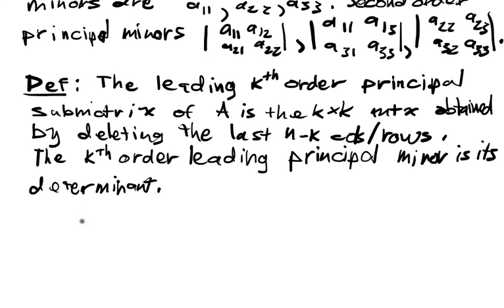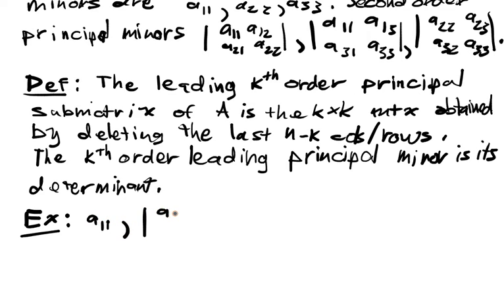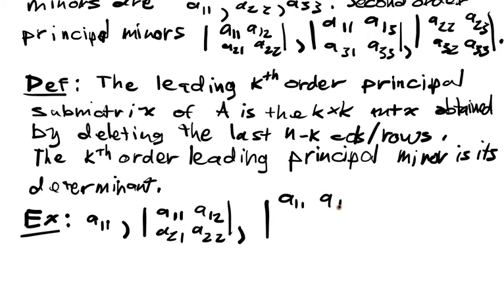These are really the quantities of interest when we want to determine the definiteness of a symmetric square matrix. For the 3x3 case, we have A11, the determinant of A11 A12 A21 A22, and the full determinant as our three leading principal minors.